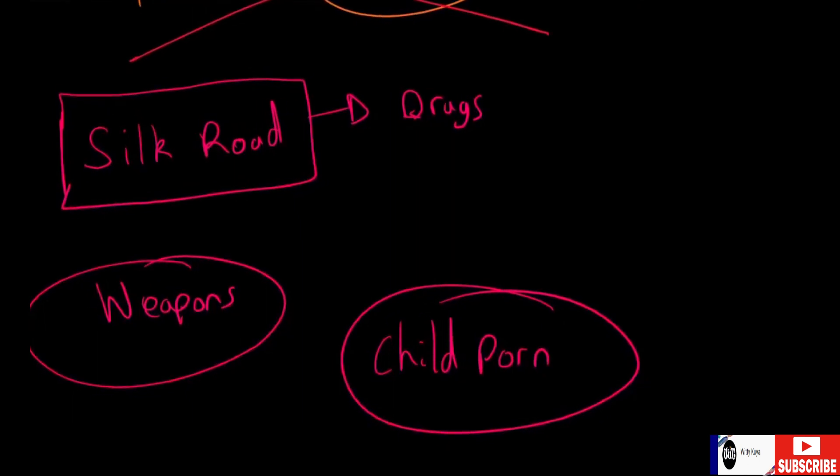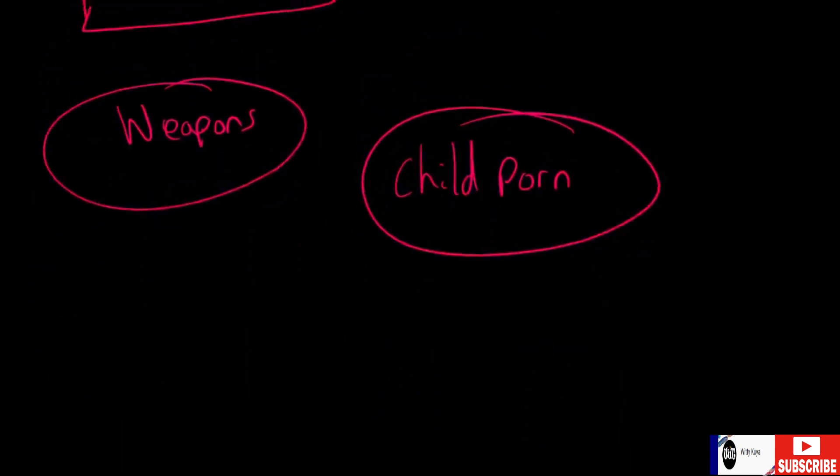Another thing is child porn. Again, I just want to mention all of these things—drugs, weapons, child porn, or anything else we're going to discuss—is done in the real world, it's done on the internet but not on the dark web, so just the regular either surface web or deep web.